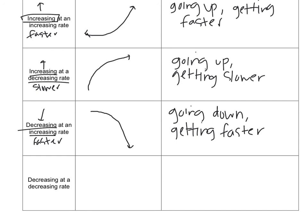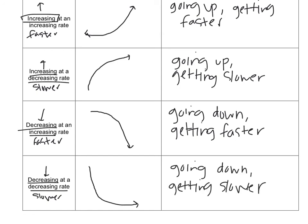We have one more. We've got decreasing at a decreasing rate. This graph is going down, but it is getting slower on the way down. This would look like going down, starts off really fast, and then it kind of flattens out. This might be an example of when you put something on a ramp. It starts off going down that ramp really fast, and then once it hits the ground and kind of just goes flat on the earth, it slows down eventually to a stop.